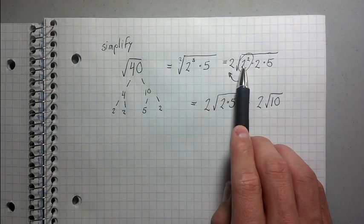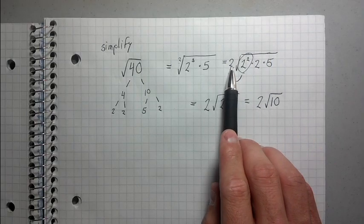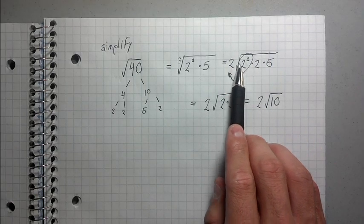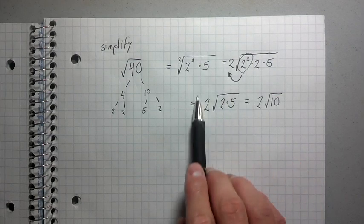And then this group of this 2 cubed, it gets pulled out of the factor, it gets pulled out of the root sign, and it becomes just a 2. Because if I took the square root of 2 squared, it's just 2, right?